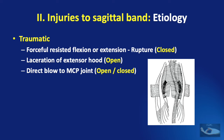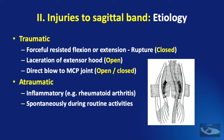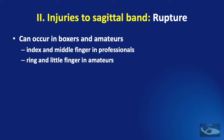The sagittal band can get injured due to traumatic causes like forceful resisted flexion or extension, which leads to rupture of the band — usually a closed injury. It can also get injured by laceration of the extensor hood, which is an open injury, or by a direct blow to the metacarpophalangeal joint, which could be open or closed. The sagittal band can also rupture in atraumatic conditions like rheumatoid arthritis or even spontaneously during routine activities when the bands are attenuated.